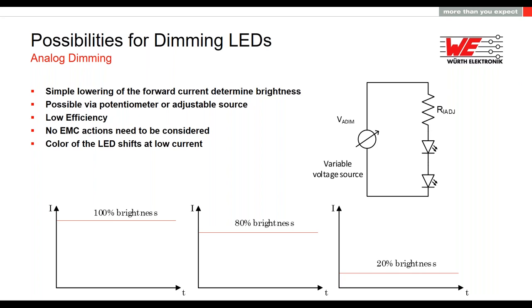The disadvantage of analog dimming is that the color from the LED can shift due to the lower absolute forward current, as just mentioned, by about 20 nanometers in wavelength.